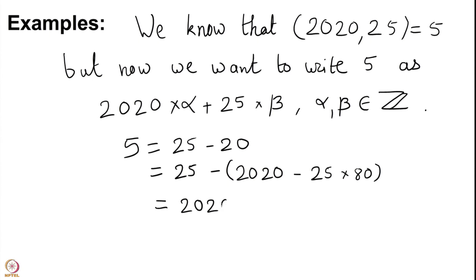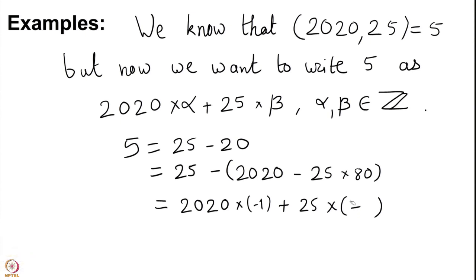Substituting back, we ultimately get 5 = 2020×(−1) + 25×81, because the 80 comes with two negative signs giving +80, and adding 1 gives 81. You can verify that 25×81 = 2025 and subtracting 2020×1 from that gives exactly 5. So we have computed GCD(2020, 25) = 5 and written it as a linear combination of those two numbers over integers.